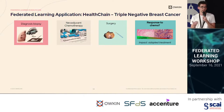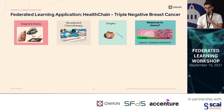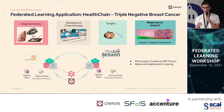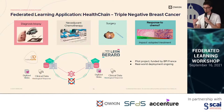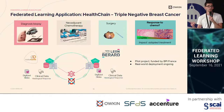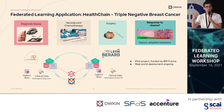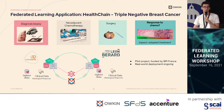Predicting this response is complicated even for very experienced doctors. The goal of this project was to train a machine learning model to predict the response to chemotherapy from the diagnosis biopsy — really the image of the cancer. We set up a collaboration between Institut Curie and Centre Léon Bérard, where each center has images of the tumor and the histological response after undergoing chemotherapy. This is a pilot project partly funded by BPI France, with real-world deployment ongoing. It is also interesting because it was not previously known that machine learning could help for this task, and thanks to federated learning we are able to access a larger cohort.